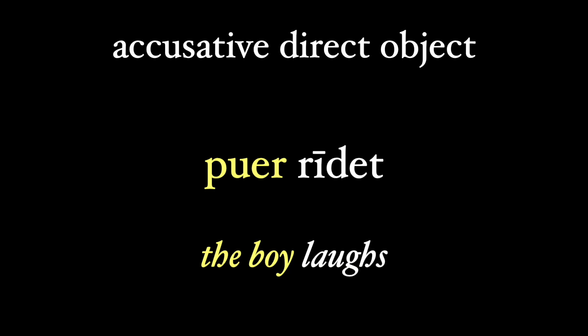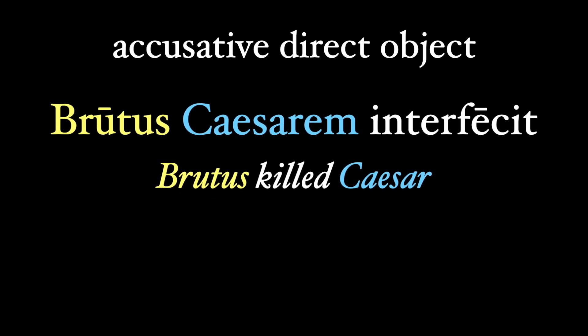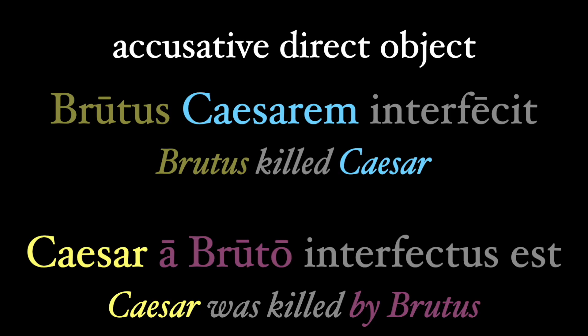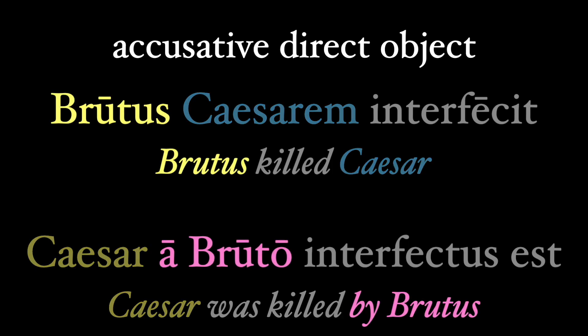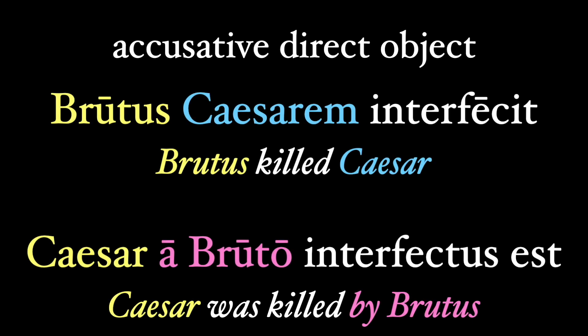Let's go just a little bit deeper. If we have a sentence like 'Brutus Caesarem interfecit' — 'Brutus killed Caesar' — here 'Caesarem' is the accusative direct object receiving the action. But we can take this sentence and make it passive. When we do so, the accusative direct object becomes the nominative subject, since the subject in a passive sentence receives the action. So 'Caesarem' becomes 'Caesar,' and we take 'Brutus' and turn it into 'by Brutus' — 'a Bruto' — and we make 'interfecit' passive with 'interfectus est': 'Caesar was killed by Brutus.'